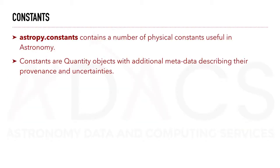The constants module from AstroPy, reachable via astropy.constants, contains a number of physical constants useful in astronomy. Constants are quantity objects, with additional metadata describing their provenance and uncertainties.